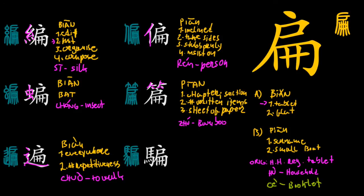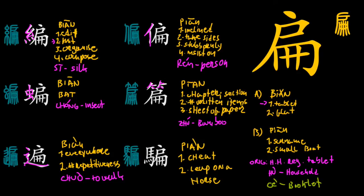The last character in the series is pronounced piàn, and has two meanings: to cheat, and to leap on a horse or get on a horse. The semantic element is 马, mǎ, meaning horse, clearly pointing to the second meaning. You can find this character in expressions like 骗子, meaning someone who's lying or trying to cheat you, or 欺骗, meaning to cheat or to swindle. Alright, this is it for this lecture. I hope you enjoyed it, and I will see you in the next video.